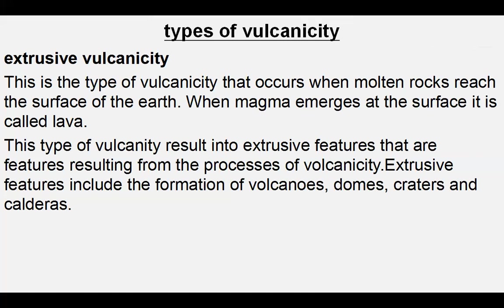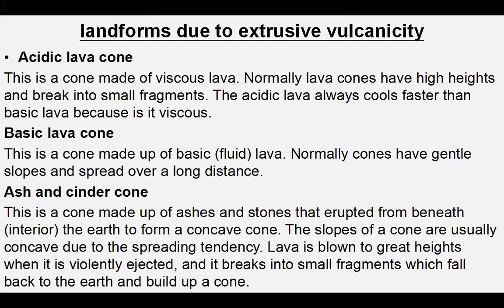Starting with the first one, a shield lava cone. This is a cone made of viscous lava with low height. There is also a cinder cone, which is formed of small fragments that build up a core. Another lava cone type is formed of ash and lava deposited over a long distance from the vent.